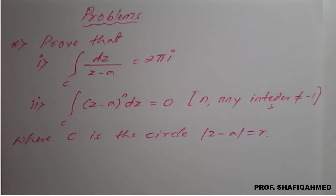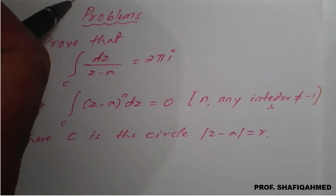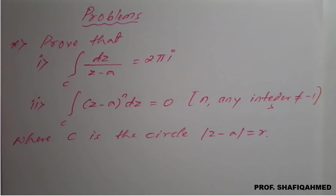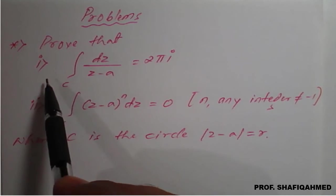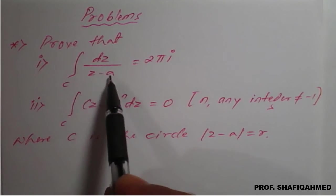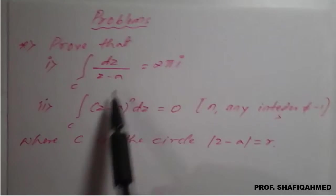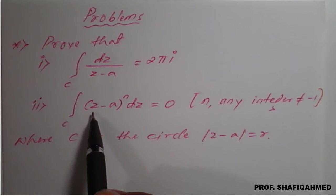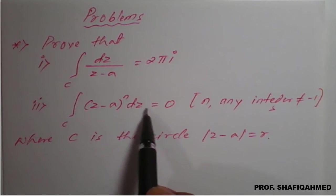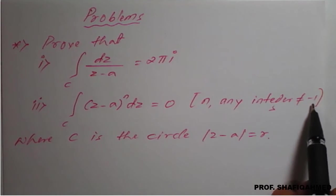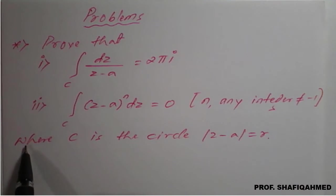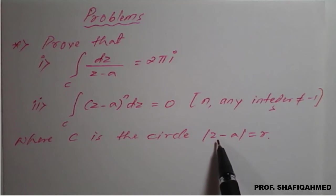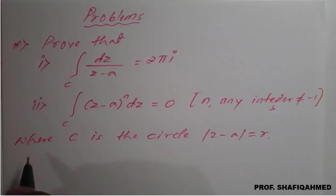In this lecture we will see a problem based on complex integration. The problem is: prove that the integration of dz divided by (z minus a) equals 2πi, and second, the integration of (z minus a) raised to n of dz equals 0, where n is any integer not equal to minus 1, and where c is the circle |z minus a| = r.